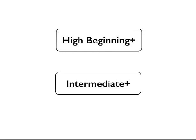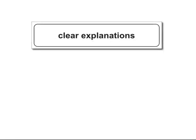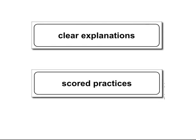Writing in English is now divided into two levels: High Beginning Plus and Intermediate Plus. Each level has over 200 screens of interactive lessons and practices with clear explanation of grammar rules in English, and scored practices with immediate feedback.